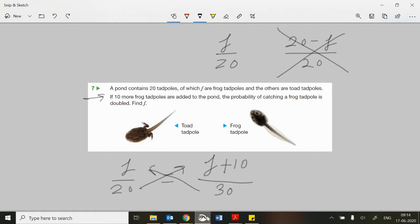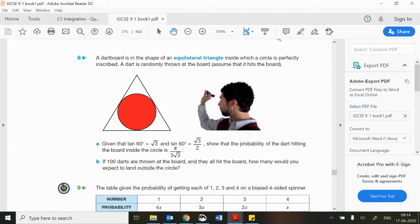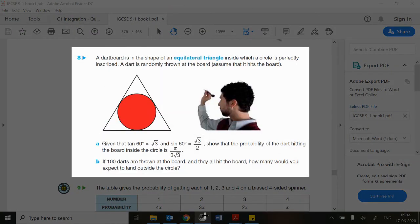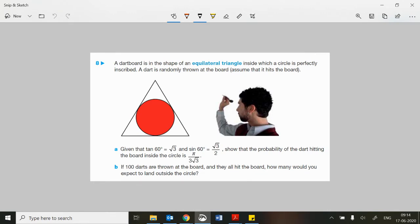Okay, let's just take out. Let's look at the next question. And so question eight is a really nice question, this one. Okay, so it's about a dartboard in the shape of an equilateral triangle. And a dart is thrown at this board and we assume that it hits the board and it's thrown randomly at the board.